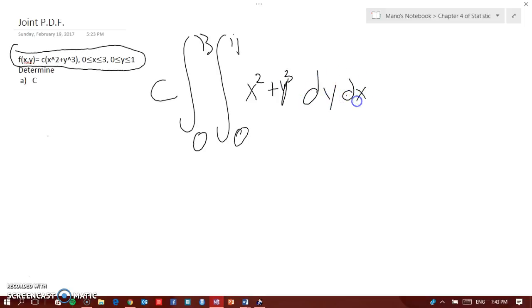So let's do this now. So we have C integral from 0 to 3 of x squared y plus y to the power of 4 over 4 from 0 to 1 dx.